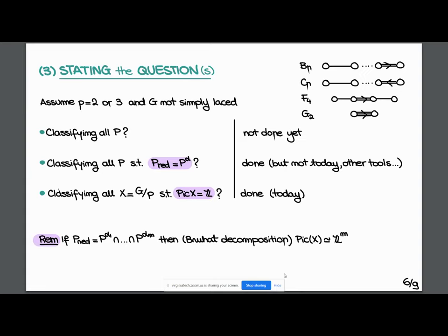Why is this question related to the previous one? Because if the reduced subgroup of P is given by the intersection of the ones associated to alpha_1 and alpha_M for some simple roots, then using Bruhat cells and Bruhat decomposition, we can see its Picard group is rank M. So studying parabolics whose reduced is maximal are exactly the ones giving as quotient a variety with Picard isomorphic to Z. The third question is easier than the first because we might express X in two different ways as a quotient. So classifying varieties is easier a priori than classifying parabolics.